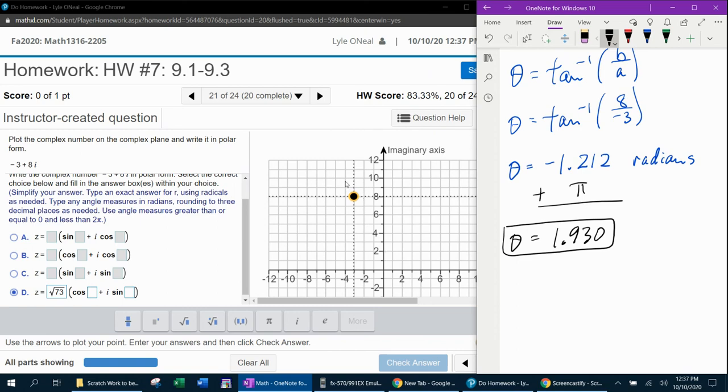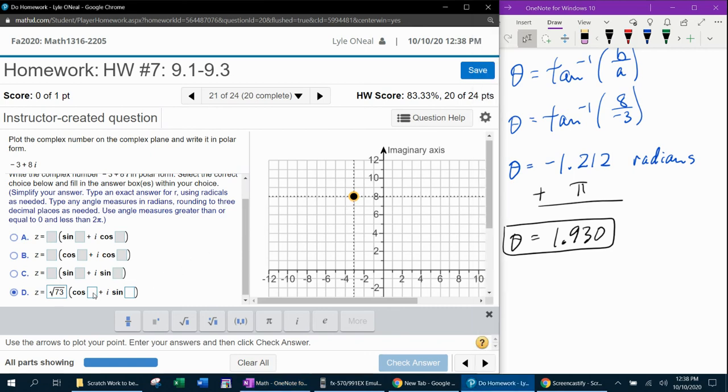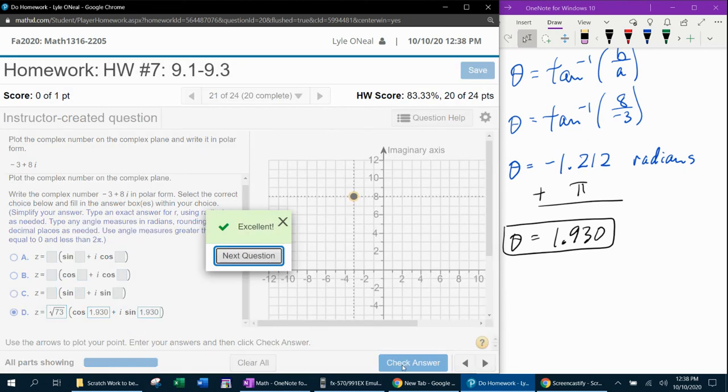Remember that when we plotted this point, it was in quadrant two. And so if you think about negative one point two one two, that would actually be going clockwise into quadrant four. So we had to add 180 to theta to bring it around from quadrant four into quadrant two, where it was supposed to be. And now all we need to do is input that answer and see if I lied to you. One point nine three zero rounded. All right, fingers crossed. Man, awesome. I hope that was helpful. If you have any questions or comments, feel free to put those in the comment section below, or you can text me. And thanks for watching.